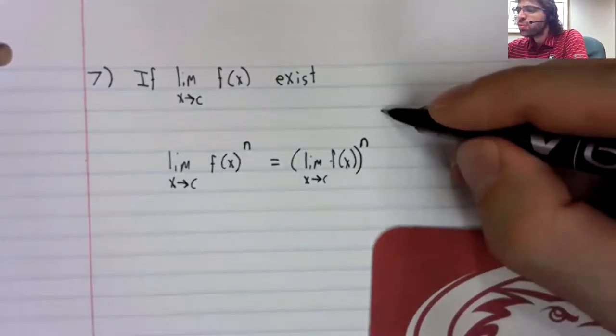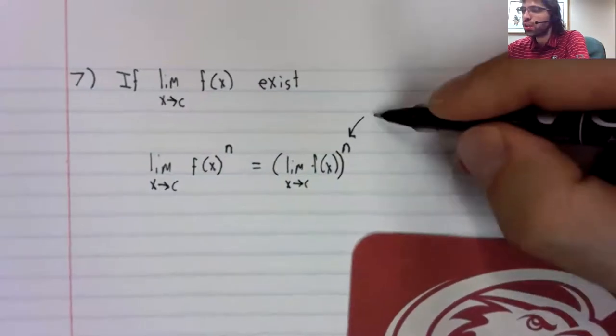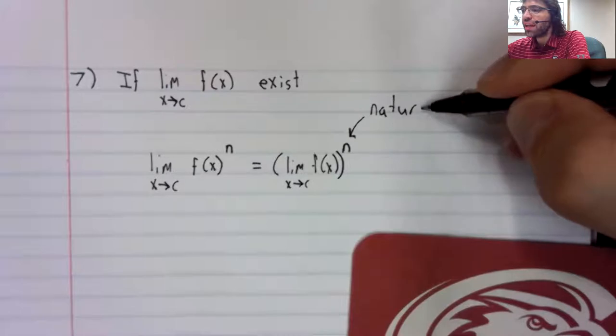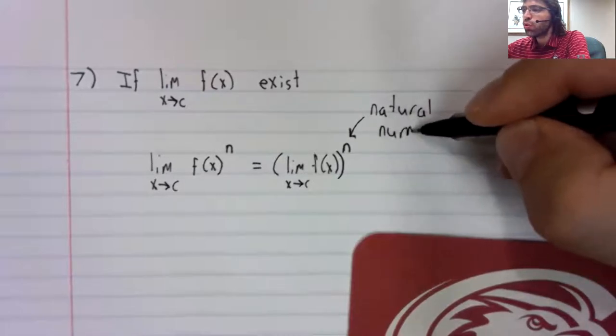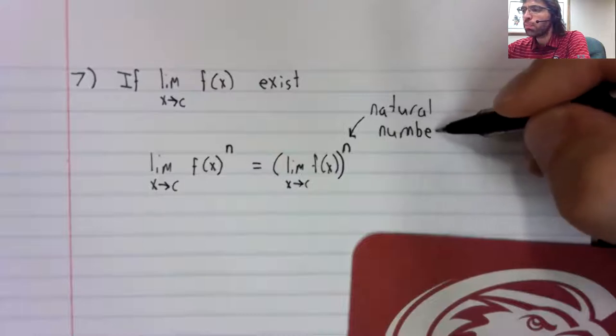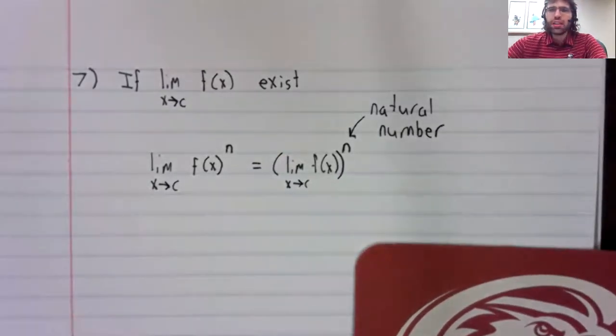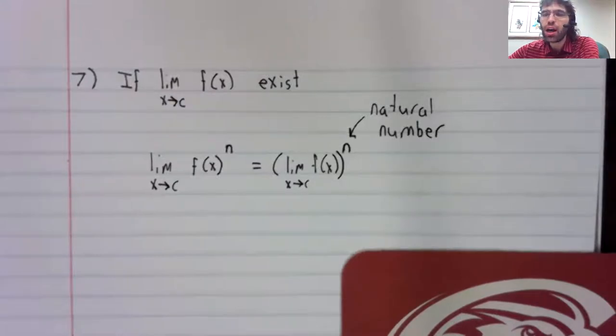And the textbook puts a condition on this. The textbook assumes that n is a natural number. And we don't really need that condition, but it can be there. It's not doing any harm.